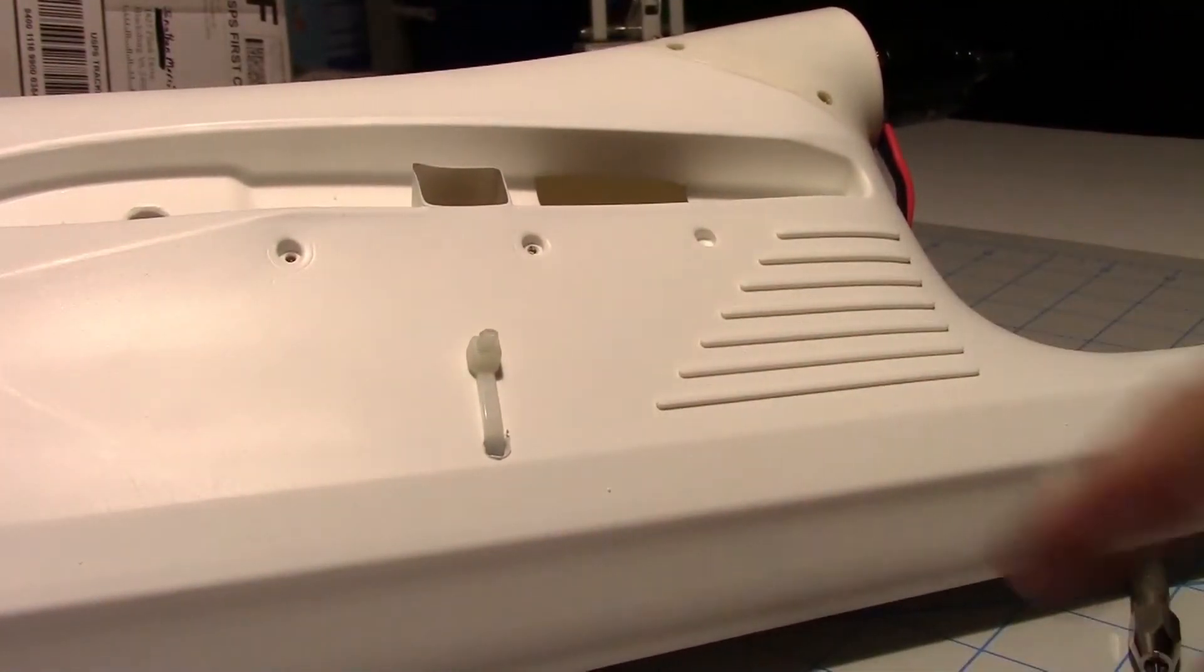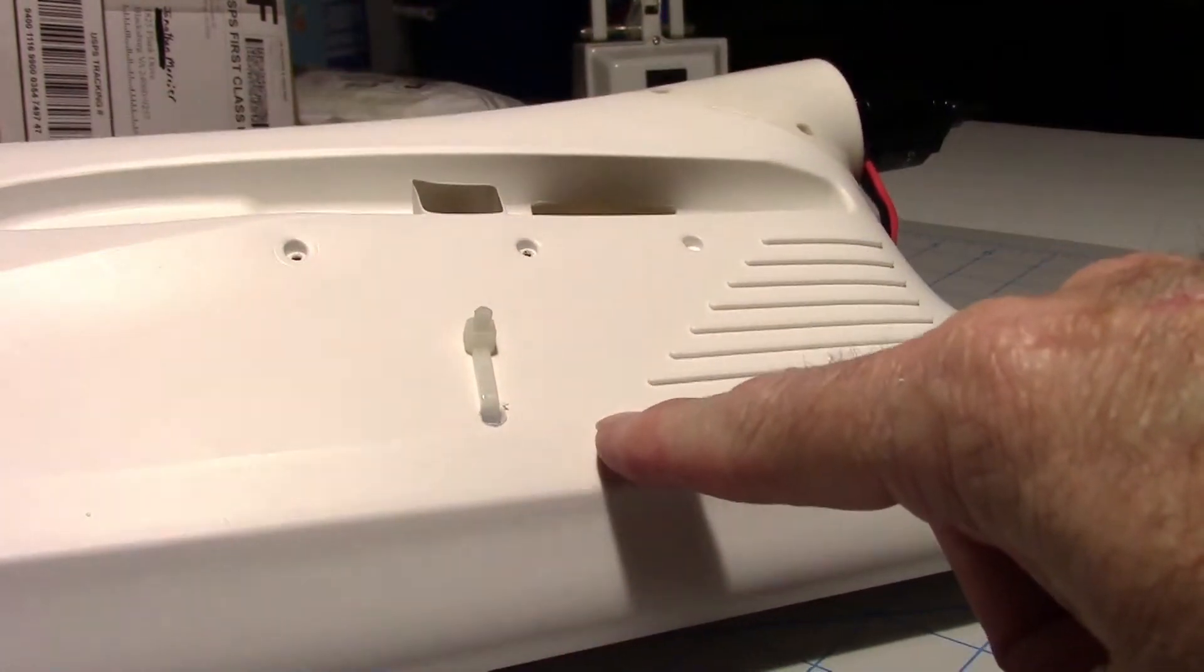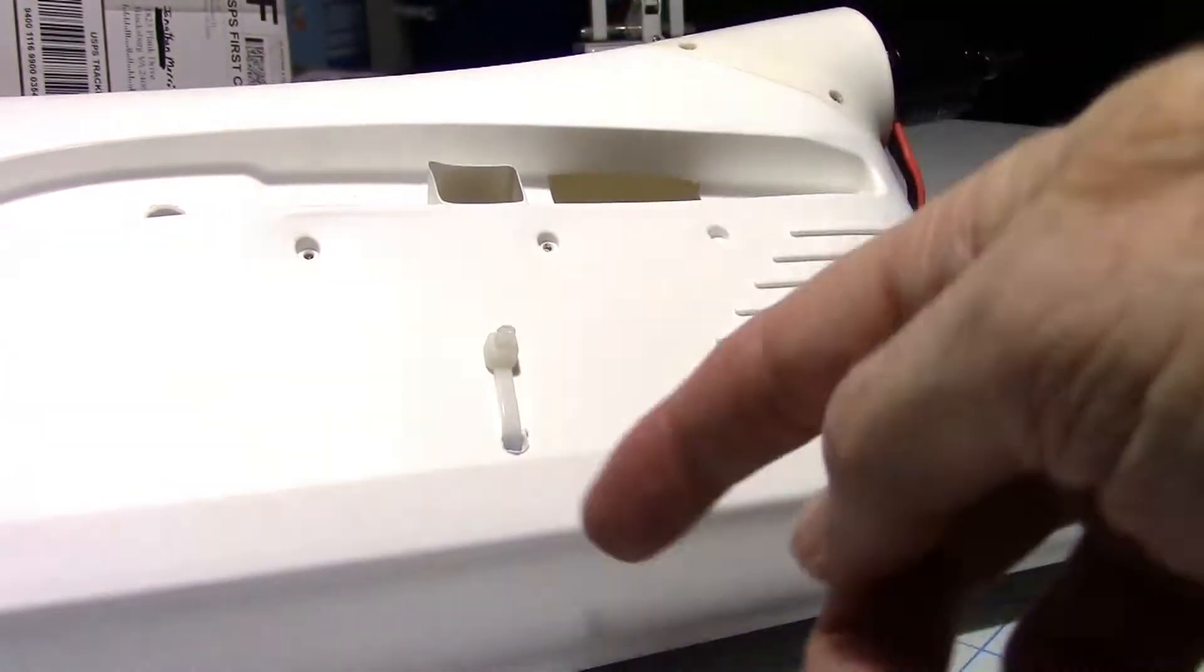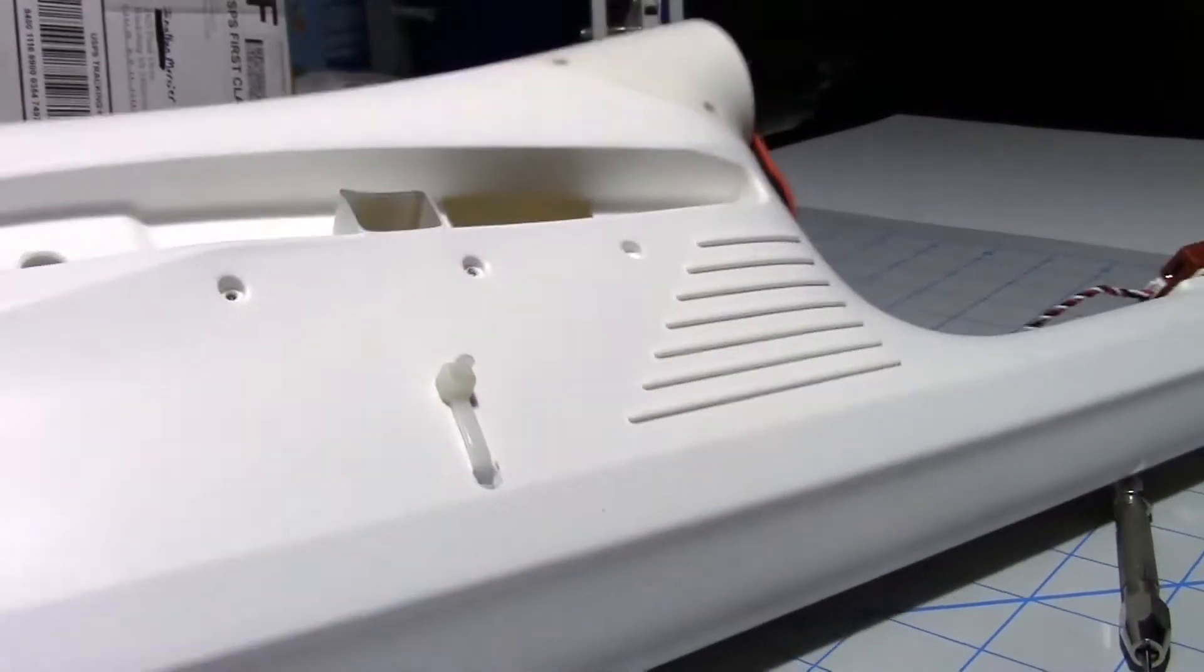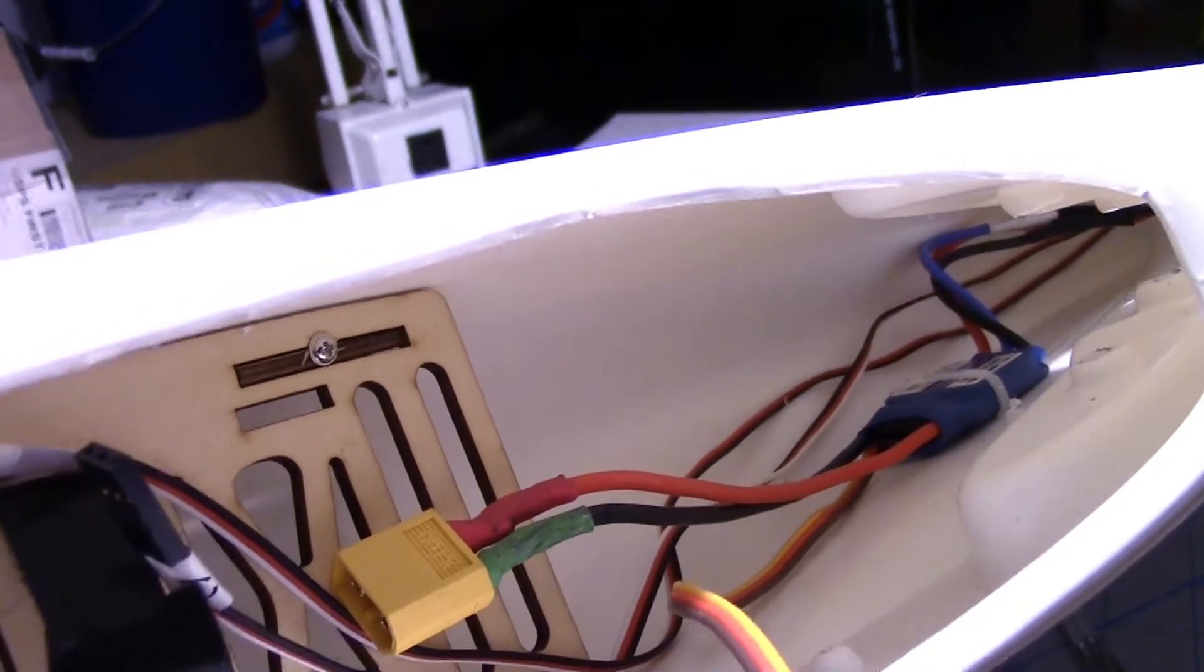I secured the ESC to the inner sidewall with a tie wrap. That was a trick. It took me quite a while to feed that through. I had to drill two holes, but then getting it to actually come back through and make a circle took me a while, but I finally got it. I don't know if you can see it down inside there. But there it is tie wrapped to the sidewall.